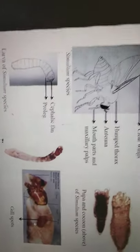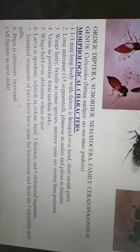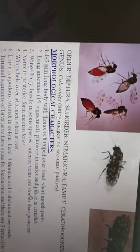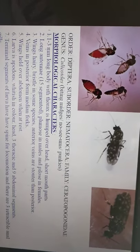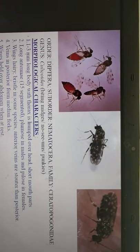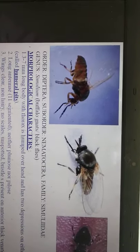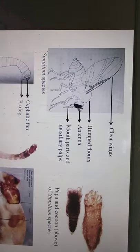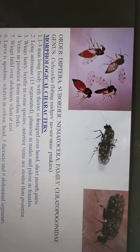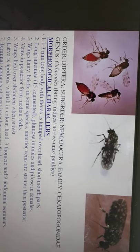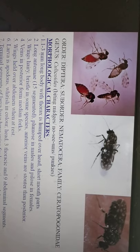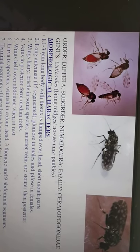Now coming to the next family, Ceratopogonidae, which consists of the genus Culicoides — also called the biting midges, no-see-ums, or punkies. You can see a clear difference in the wings compared to Simulium. Simulium has clear wings, but here Culicoides has mottled wings — the wings are dark in color with whitish or grayish light areas. This wing pattern is called mottled wings.